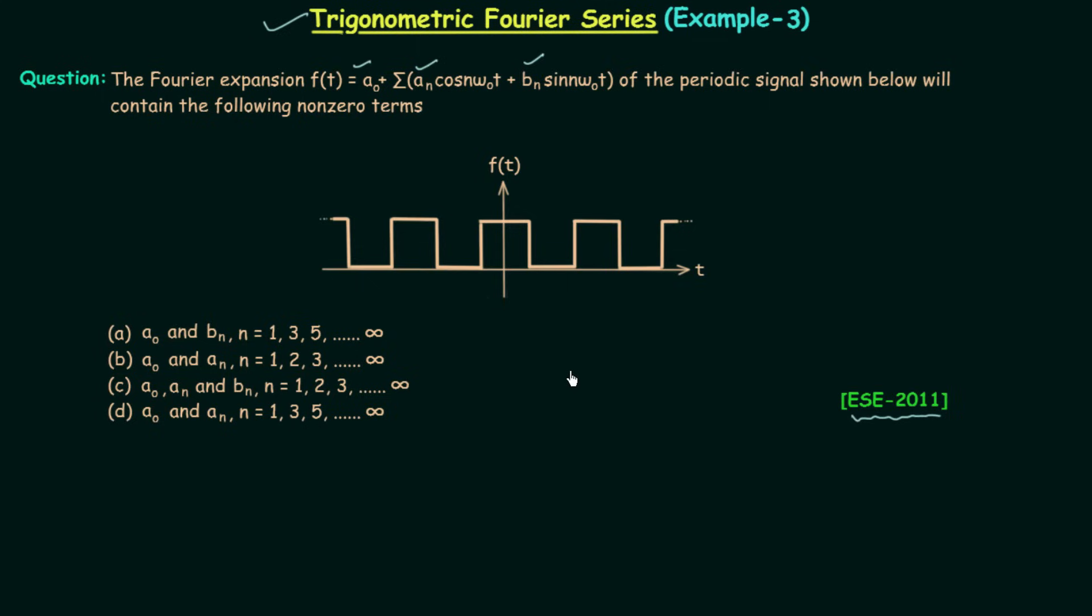First we will check whether the given waveform is symmetrical about the time axis or not. If the waveform is symmetrical about the time axis, this implies a0 is equal to 0 because when waveform is symmetrical about the time axis then the area over one time period is going to be 0 and when area is equal to 0, the average value is also equal to 0 and a0 is the average value of the given signal.